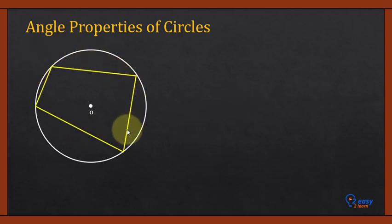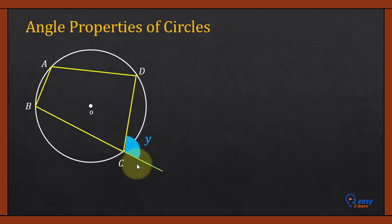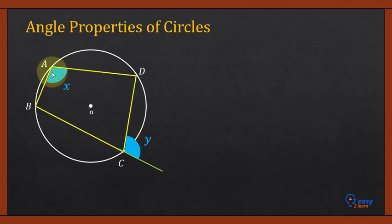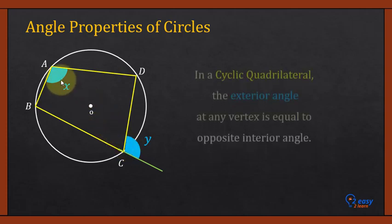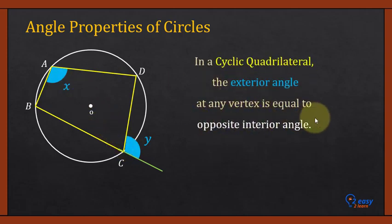There is a second property of cyclic quadrilaterals. In cyclic quadrilateral ABCD, if we extend line BC, we get an exterior angle represented by y (shown in blue). Opposite this exterior angle is an interior angle represented by x. The exterior angle of a cyclic quadrilateral is always equal to the opposite interior angle, so y equals x.